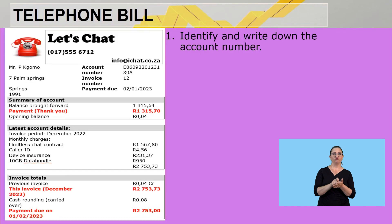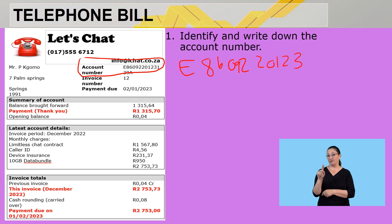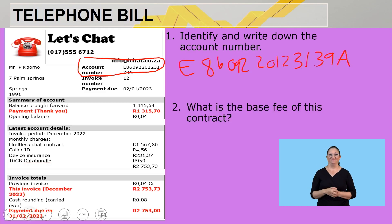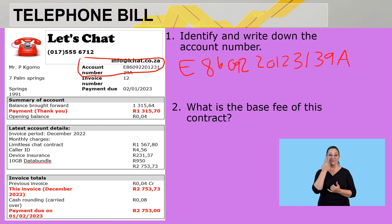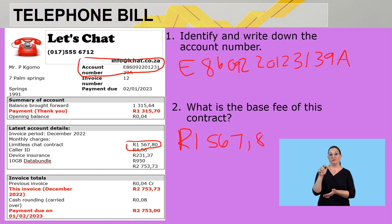Let's quickly look at some questions. Identify and write down the account number — it's E8609220123139A. What is the base fee of this contract? If we go and look at the base fee under monthly charges, the contract base fee is R1,567.80.